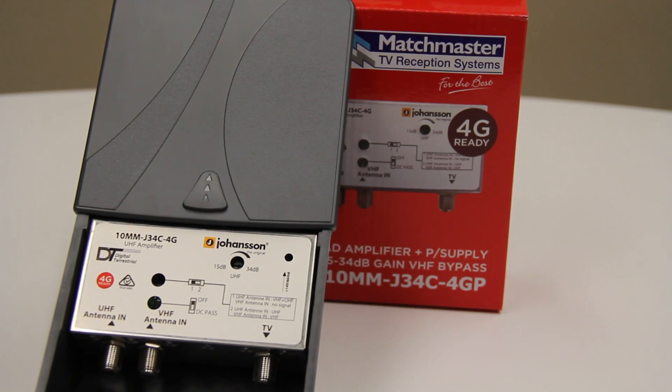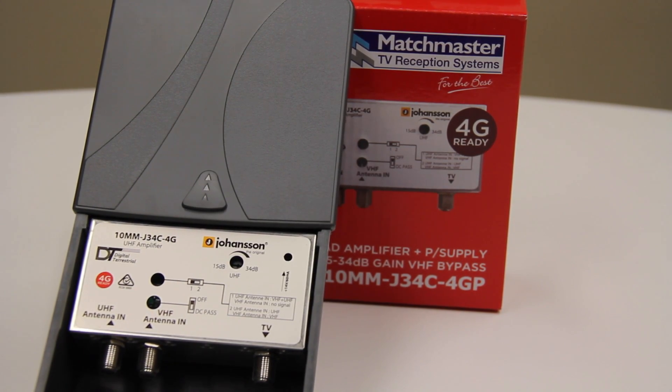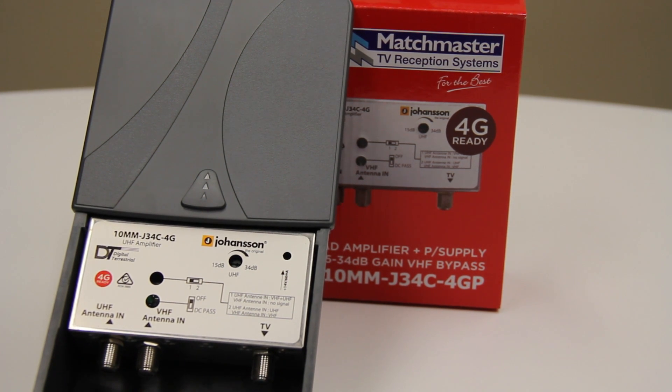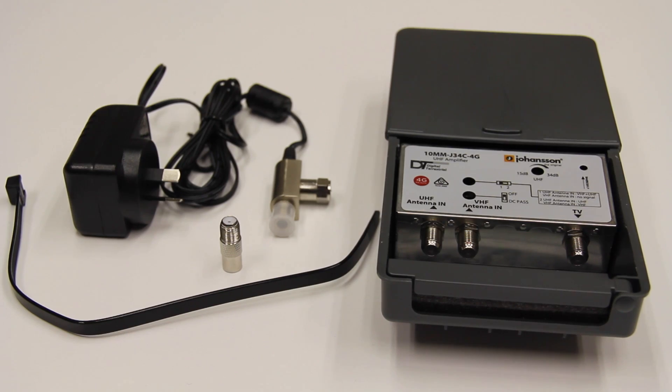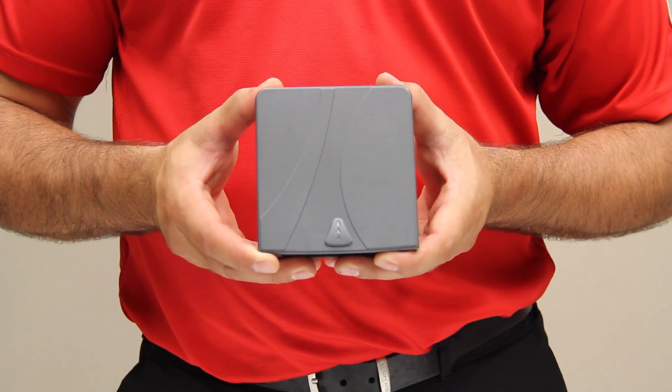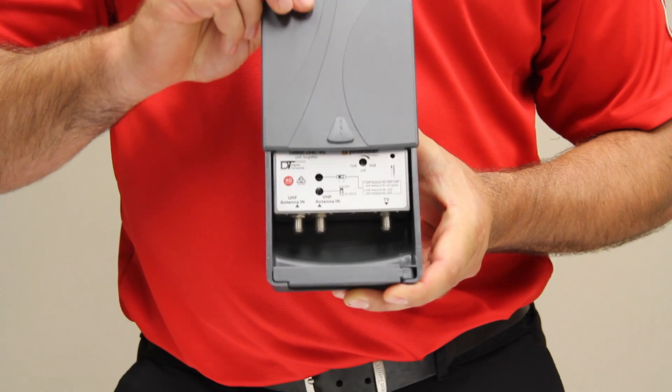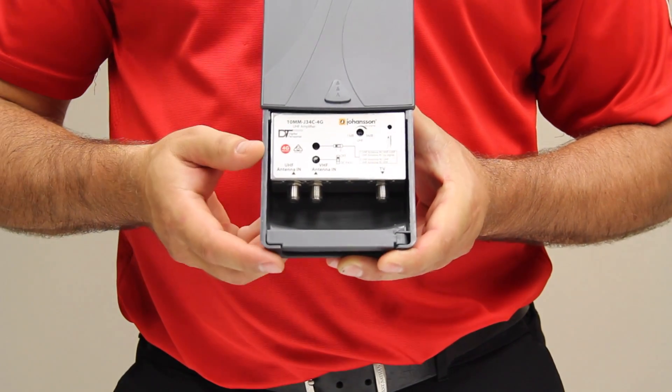We will start with a 10mm J34C 4G. It has a frequency range of 174 to 230 MHz for VHF and 520 to 694 MHz for UHF. This is a UHF amplifier with a VHF pass-through diplexer.